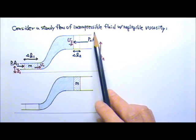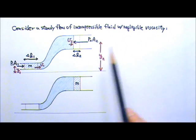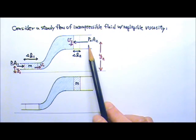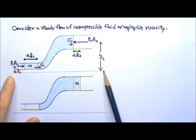Consider a steady flow of incompressible fluid with negligible viscosity through a pipe with two horizontal sections of different cross-sectional areas and different heights.